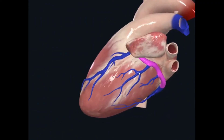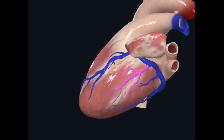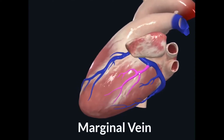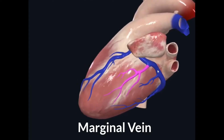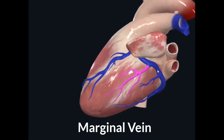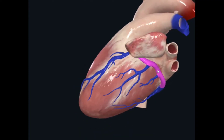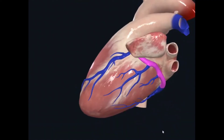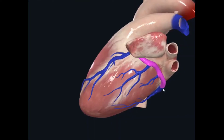This great cardiac vein also receives a small vein from the left margin of the heart, known as the left marginal vein, which drains into the great cardiac vein. And if you trace the great cardiac vein posteriorly, you will find that it ultimately continues with the left end of your coronary sinus.